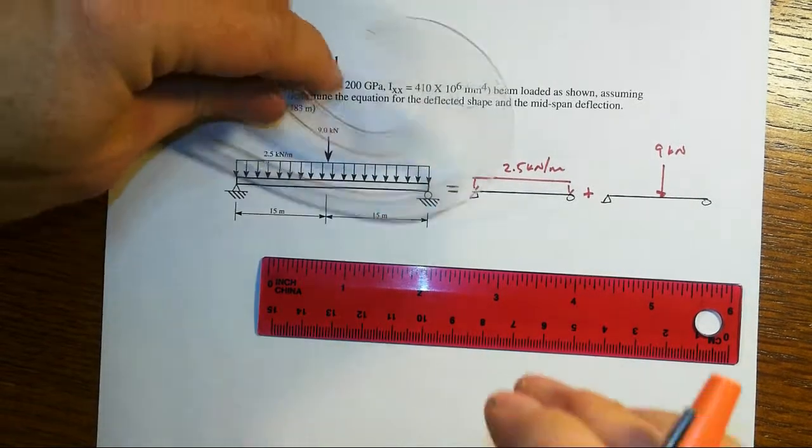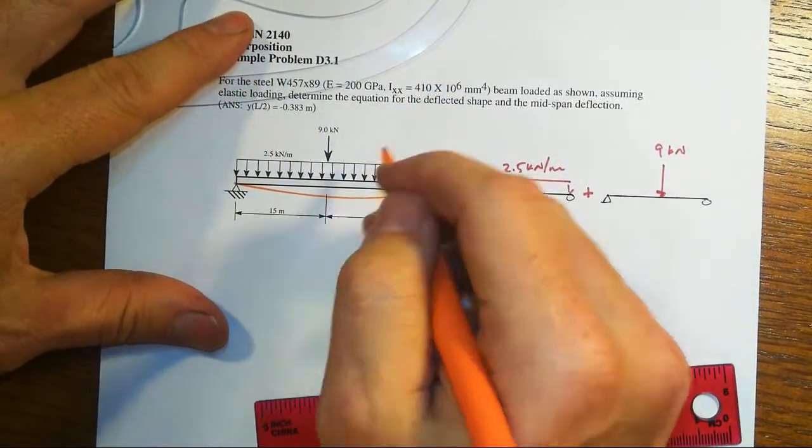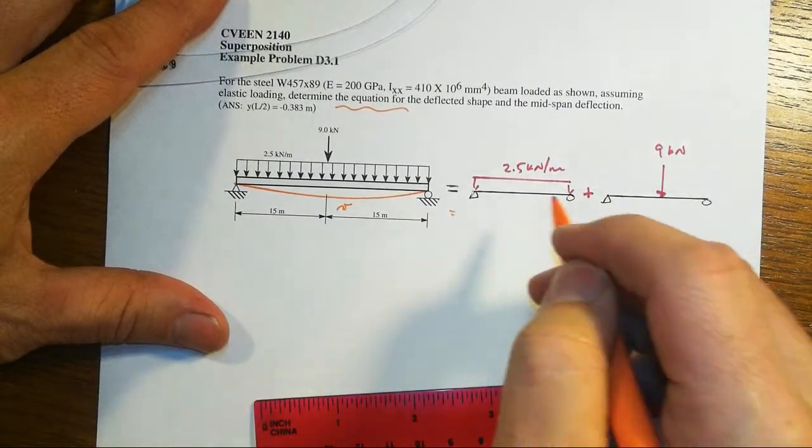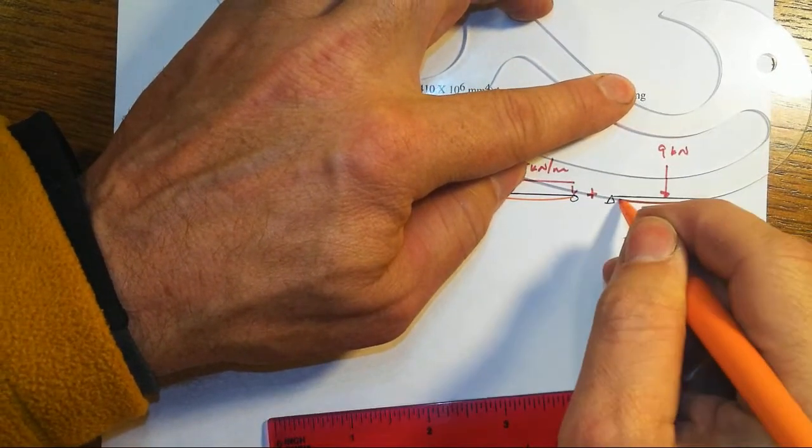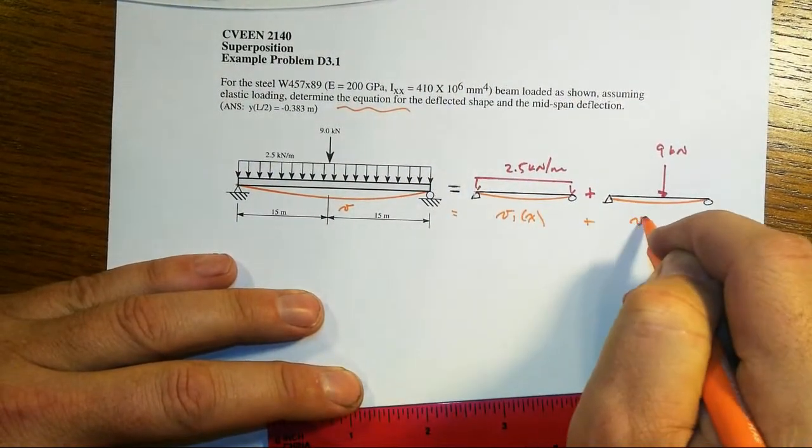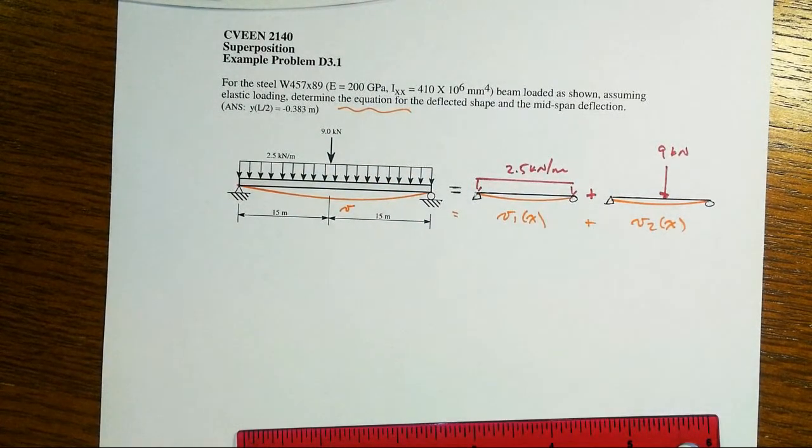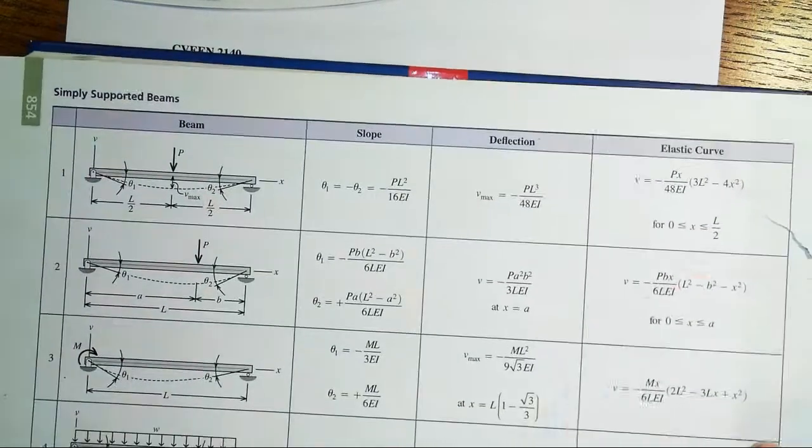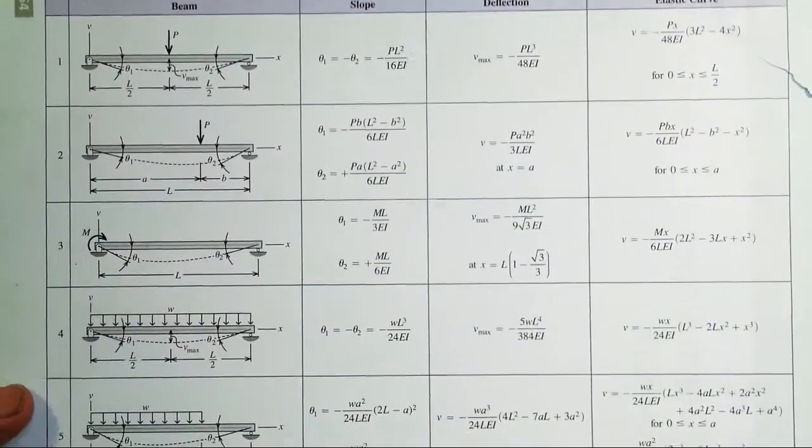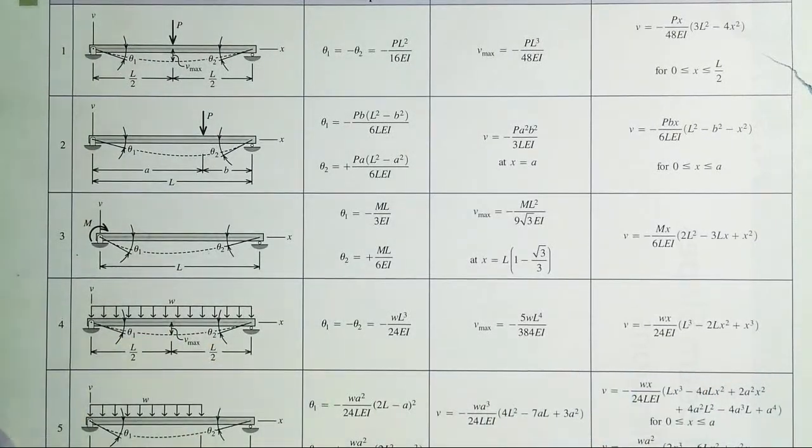That's nine kilonewtons there. This is two and a half kilonewtons per meter. And we can always then add things up because this is a system that is responding in the linear elastic region. So, therefore, superposition certainly applies. And that means that when we want to find, for instance, this overall deflected shape, this thing here, that's V.